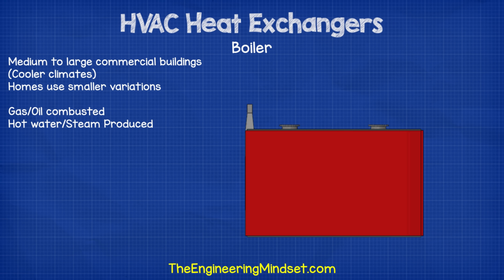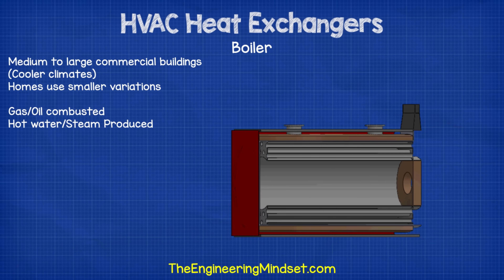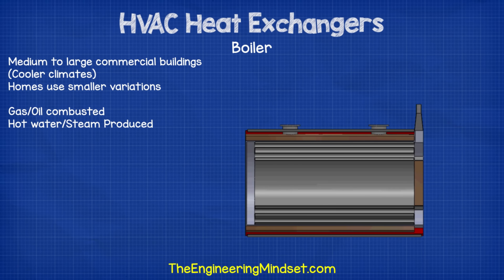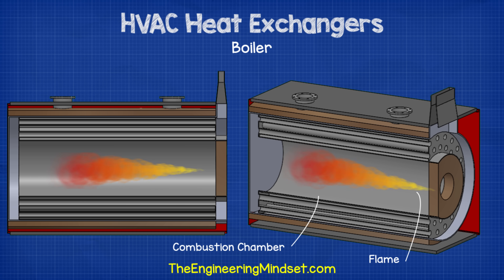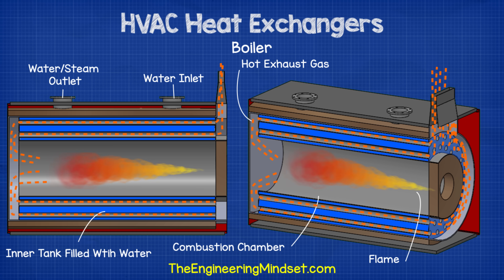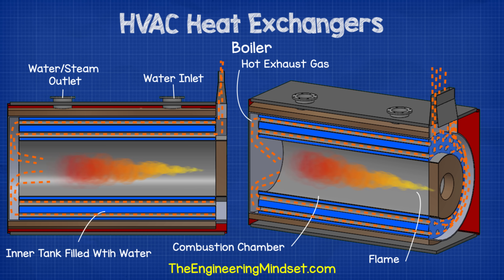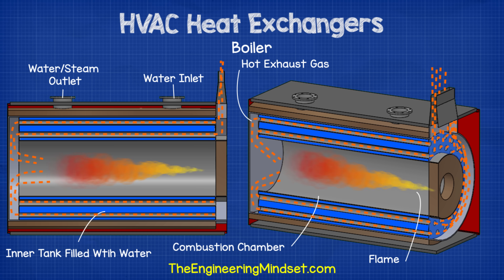Large water boilers are found mostly in medium to large commercial buildings in cooler climates, with smaller wall-mounted versions for homes. Fuel is combusted in the combustion chamber — usually gas or oil — and the hot exhaust gases are forced through a number of tubes until they reach the flue and are released to the atmosphere. The tubes are surrounded by water; heat convects to the tube walls and conducts through into the water, which is then carried away by convection as either heated water or steam. A pump forces the water through, and its speed and fuel combustion rate can be varied to change temperature and flow rate.